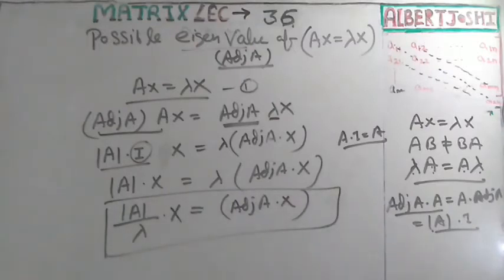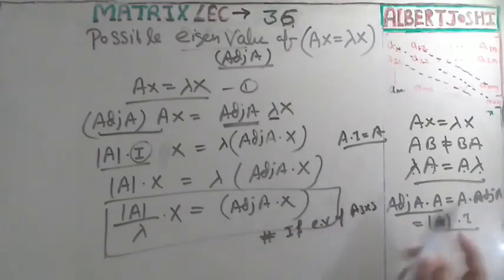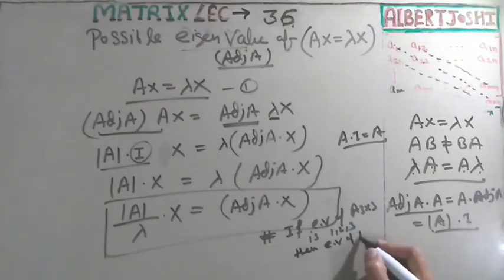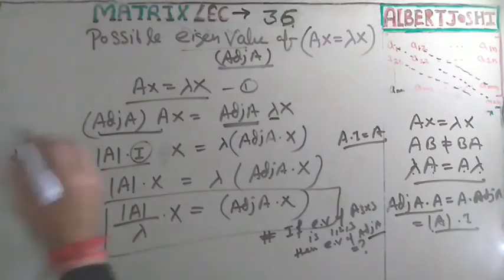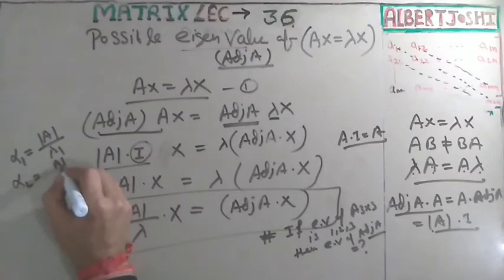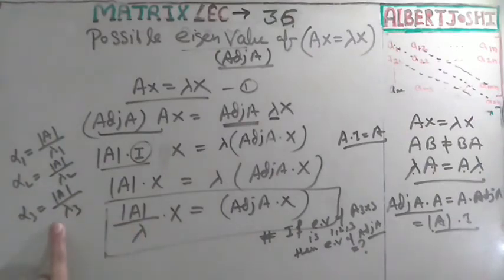This result can appear in your exam. Suppose the eigenvalues of a 3×3 matrix A are 1, 2, and 3. Then the eigenvalues of adjoint of A are: α₁ = det(A)/λ₁, α₂ = det(A)/λ₂, and α₃ = det(A)/λ₃. There are three eigenvalues in total.